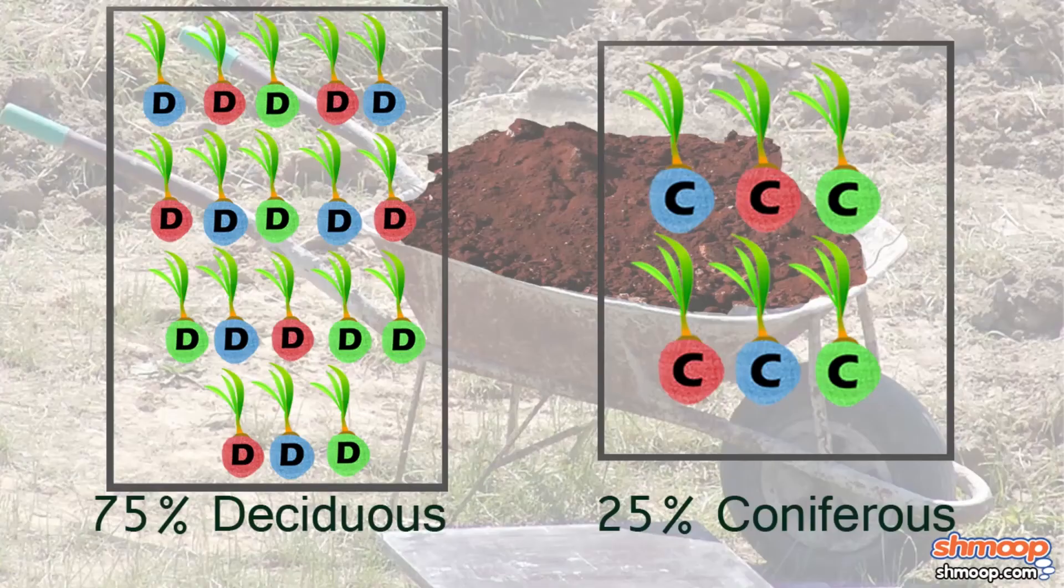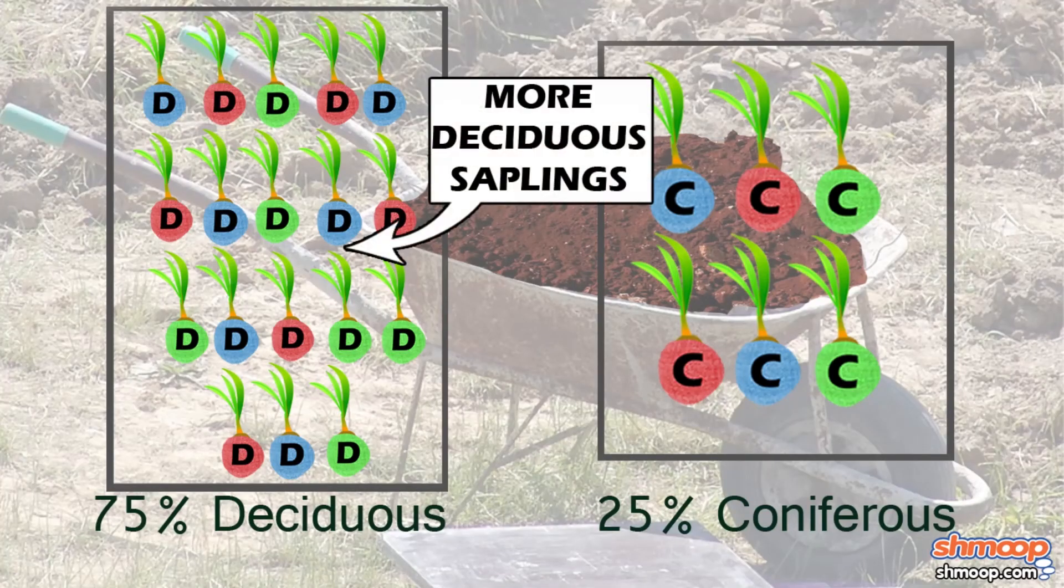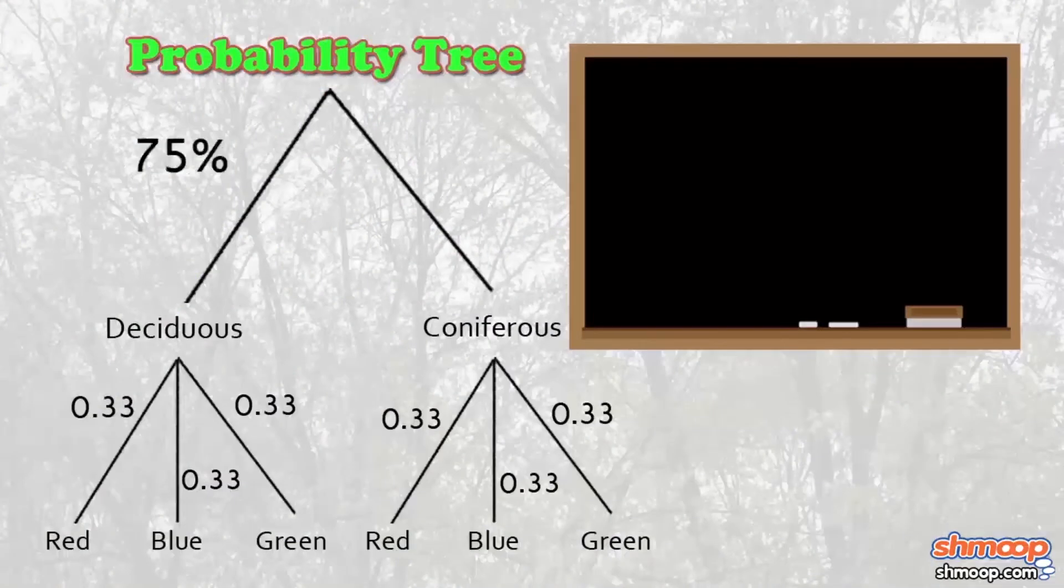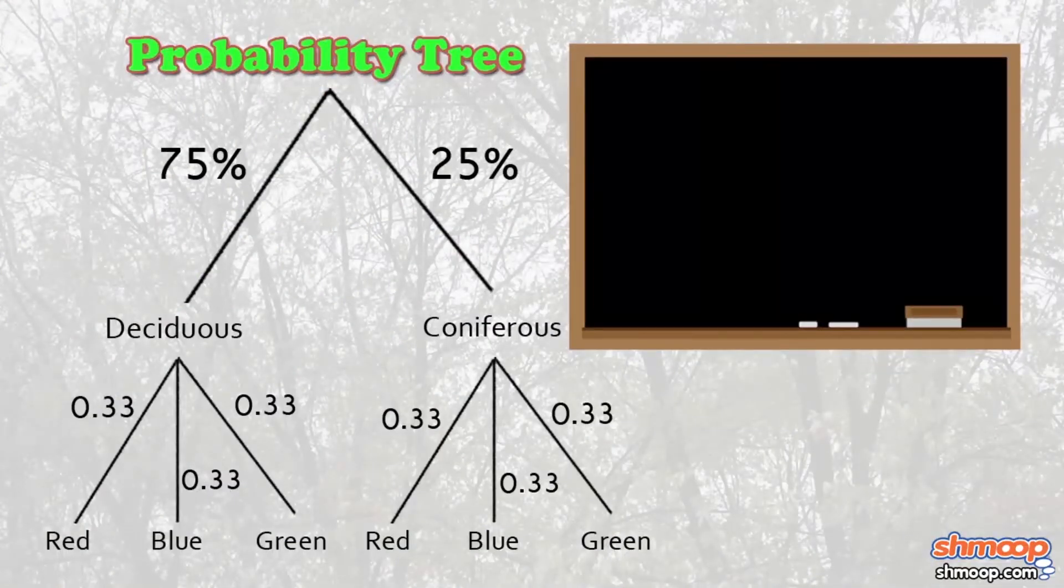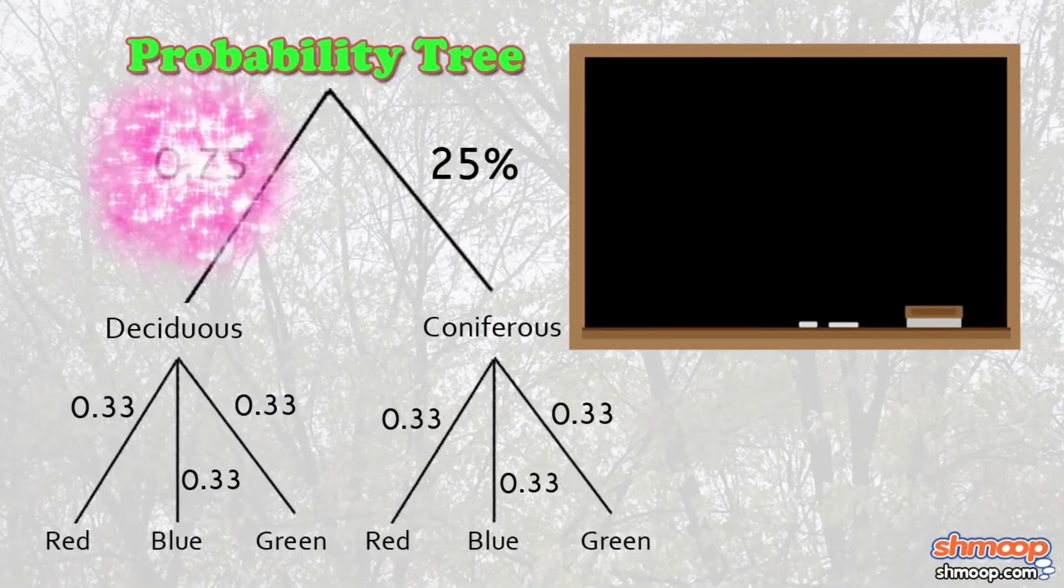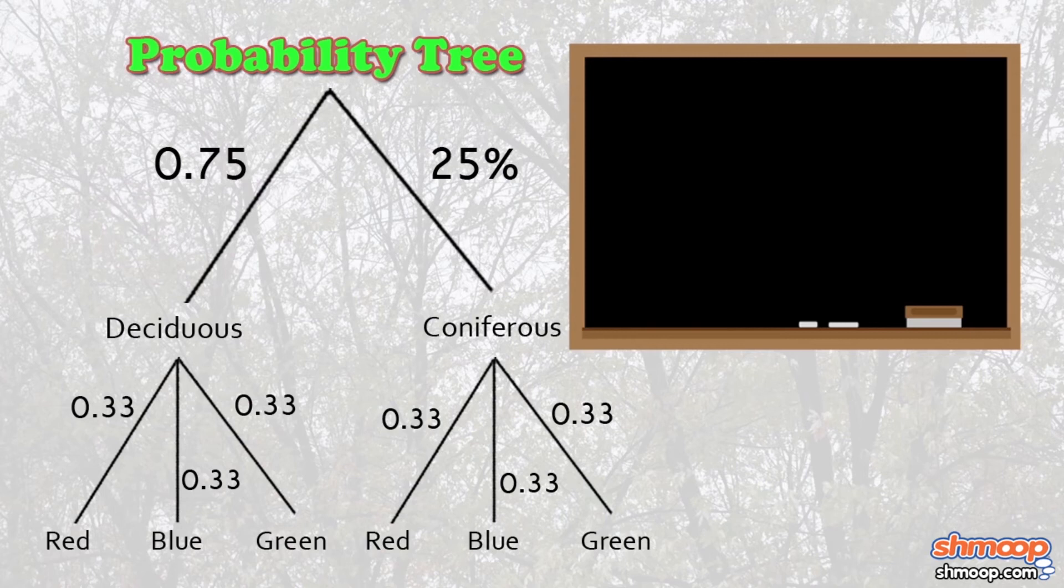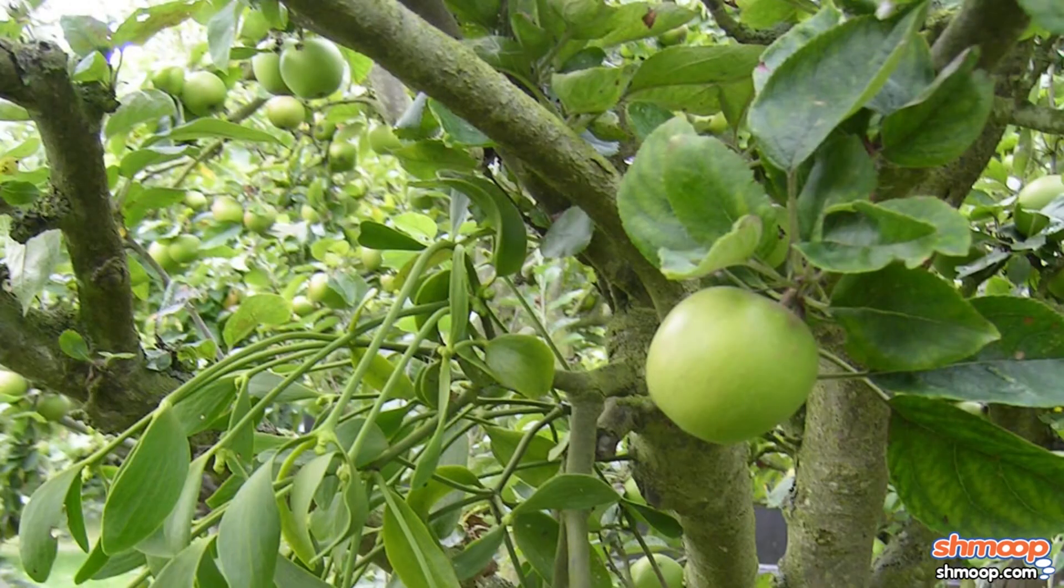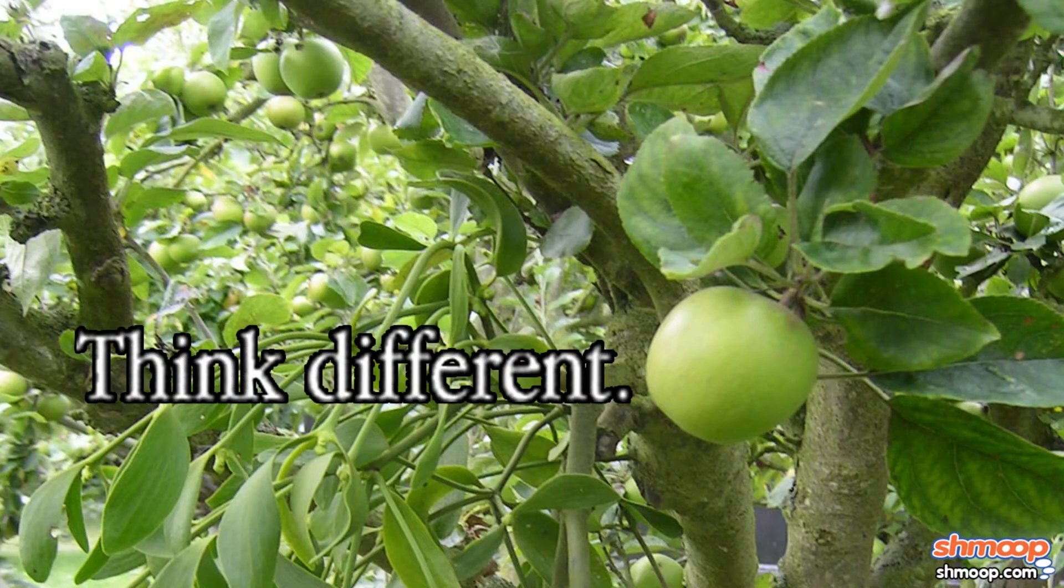What if we don't have an even distribution of tree types? No worries. If we have a 75% deciduous and 25% coniferous distribution, we simply label them 0.75 and 0.25 instead. Now, our odds of picking certain combinations will be different, but we can still figure them out by using our tree.